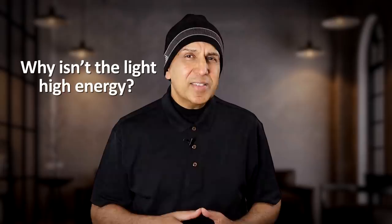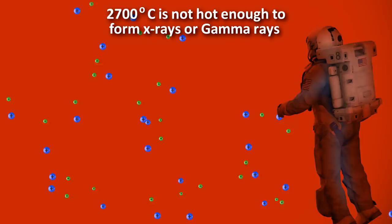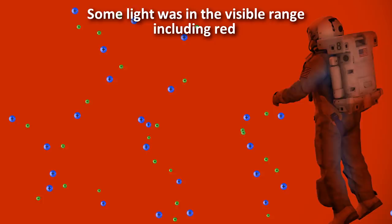One thing you might be wondering is, why is this light from the very early universe microwave light, which is a relatively low energy light? Shouldn't this light be higher energy like x-rays or gamma rays, since the early universe was extremely hot and energetic? Well the answer is that indeed this light was higher energy or shorter wavelength originally, but at 2700 degrees celsius it was not energetic enough to be x-rays or gamma rays. It was mostly in the infrared range. In fact, part of this light was also in the visible range, so you would have been able to see it with your own eyes if you were there.